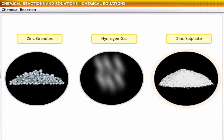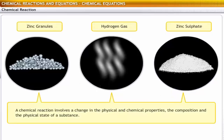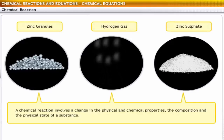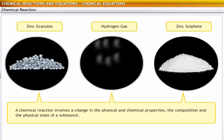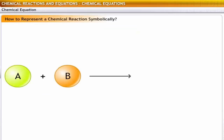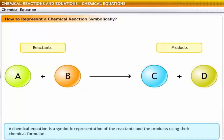Hence, we can say that a chemical reaction involves the change in the physical and chemical properties, the composition and the physical state of a substance, whether an element or a compound. A chemical reaction is typically expressed in terms of a chemical equation, which indicates the components in a reaction, the physical state of each reactant, and the products of the reaction. Thus, a chemical equation is a symbolic representation of the reactants and the products using their chemical formulae.